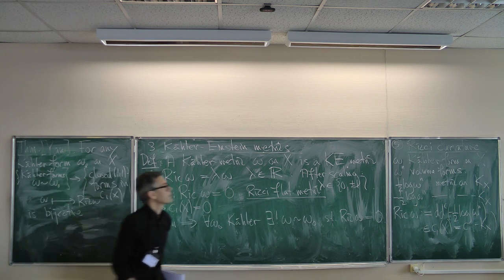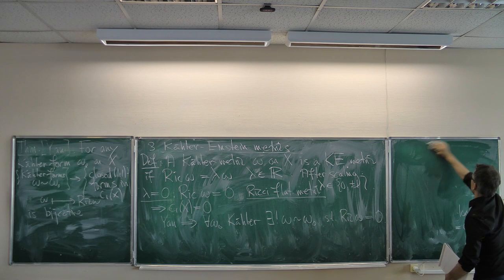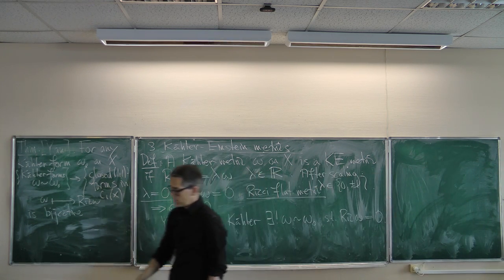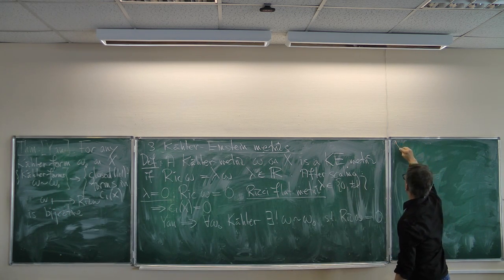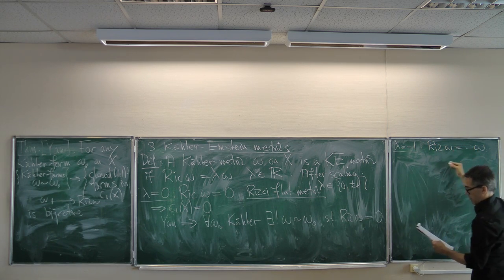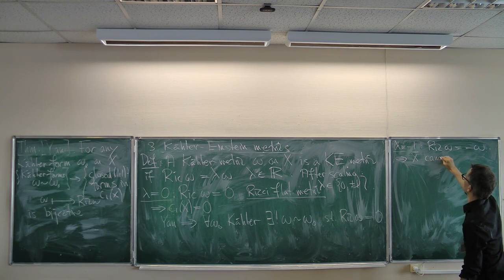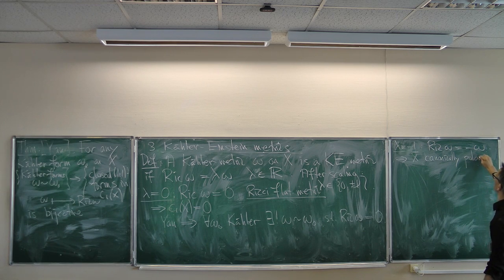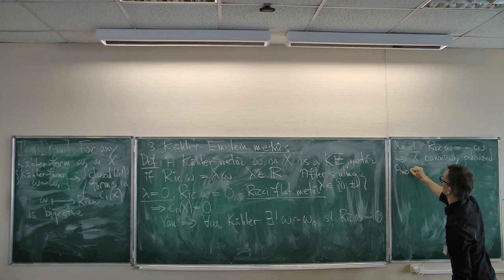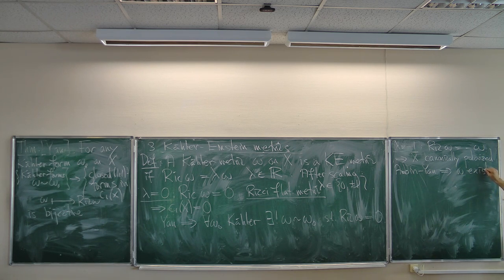When λ = −1, so Ric(ω) = −ω, this is only possible if c₁(X) is negative, meaning X is canonically polarized. The theorem by Yau, or Aubin-Yau, implies that such an ω exists and is unique in that case. For canonically polarized X, the canonical bundle K_X is ample — there are enough sections to give an embedding into projective space.